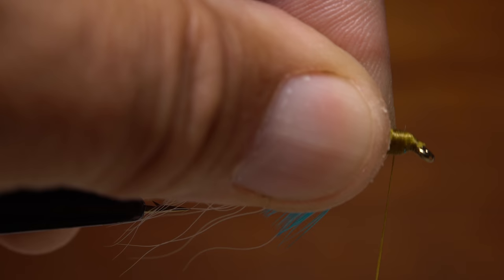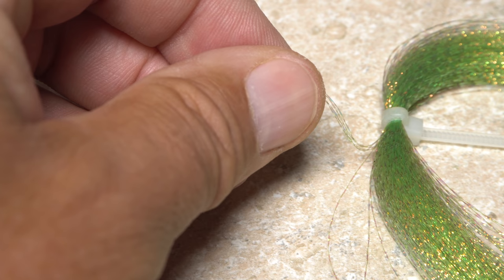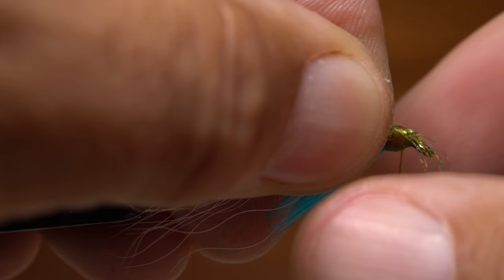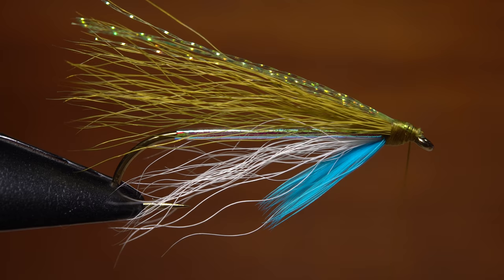Position your tying thread at the back edge of the thread wraps. Now snip a half dozen or so strands of olive crystal flash free from the hank and lay them on the top of the wing, even with its tips. Again, use thread wraps to secure it, then lift the excess up and snip it off close.